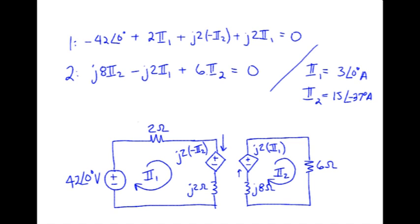To finish off we convert those back into the time domain. Again, a reminder we need to use sine. And the frequency was 8 radians per second. There's I1. And I2 is 15 times sine of 8t minus 37 degrees amps.